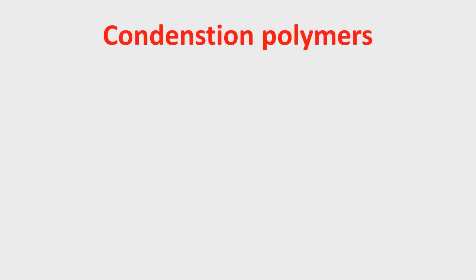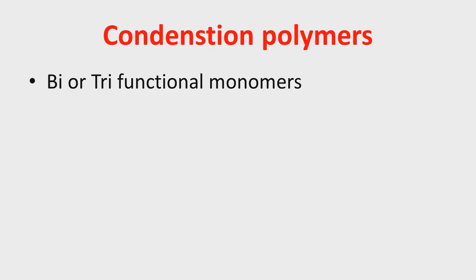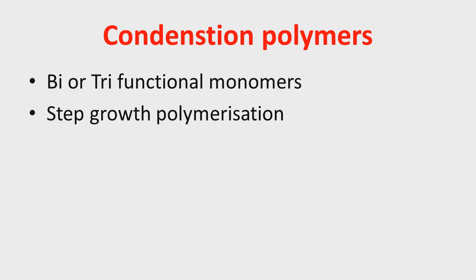Now let's start with another category: condensation polymers or condensation polymerization. Condensation polymerization is formed by combination of different monomers with elimination of small molecules. Condensation polymers are basically formed from bifunctional or trifunctional monomers. It is also known as step growth polymerization, because the process is carried out in small steps.